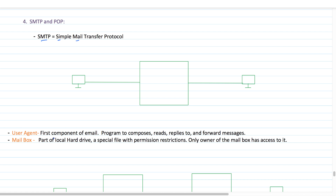The first component is called the User Agent. A user agent is basically the first component of email. It is a program to compose, read, reply to, and forward messages. The user agent is present at both the sender and receiver side. At the sender side, the user agent will compose and forward the message, while at the receiver side it will read and reply.